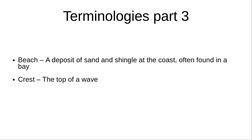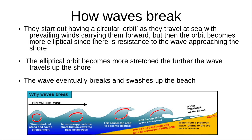It is also helpful to know how waves break. They start out by having a circular orbit as they travel at sea, but then the orbit becomes more elliptical since there is resistance to the wave approaching the shore. The elliptical orbit becomes more stretched the further the wave travels up the shore, and then the wave eventually breaks and swashes up the beach.